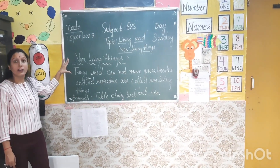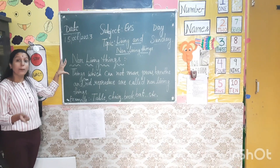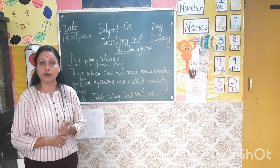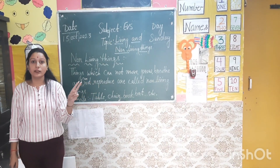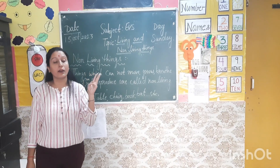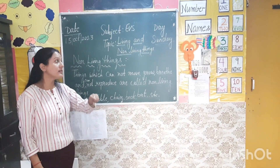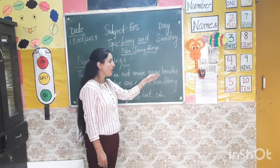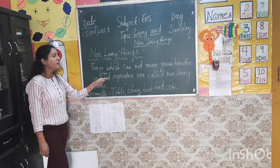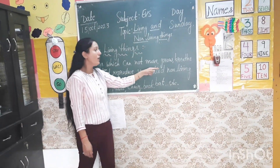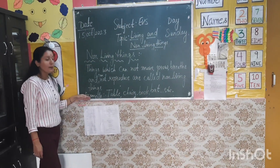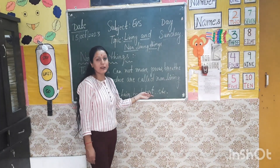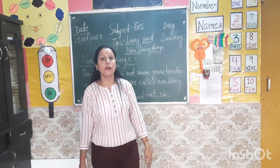Now children, the second is non-living things. Non-living things are the opposite of living things. Things which cannot move, grow, breathe, and cannot reproduce are called non-living things. The examples of non-living things are table, chair, book, and bag. These are the examples of non-living things.